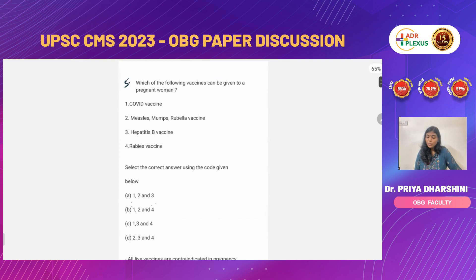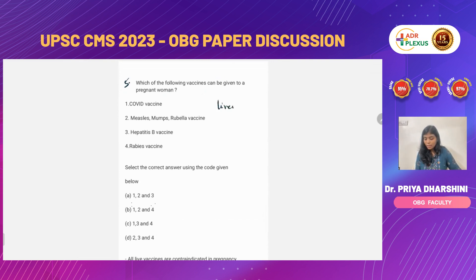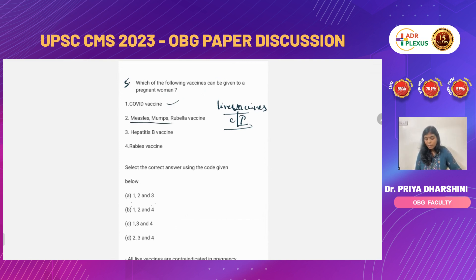Next question: which of the following vaccines are given to pregnant women? In pregnancy, all vaccines can be given except live vaccines — live vaccines are contraindicated. COVID vaccine can be given. MMR, however, should never be given in pregnancy.